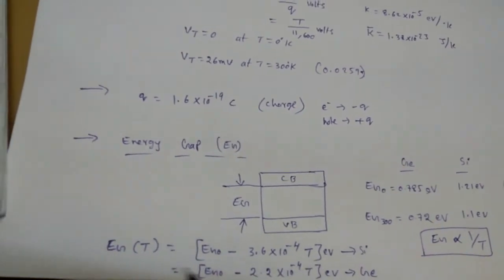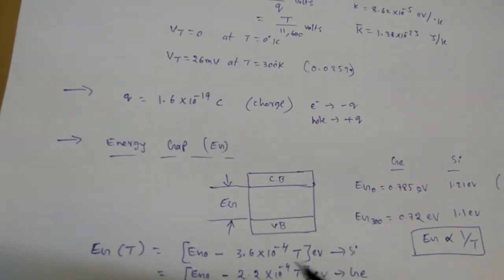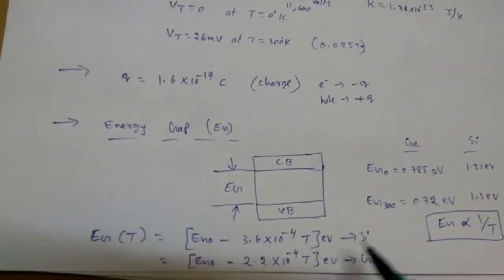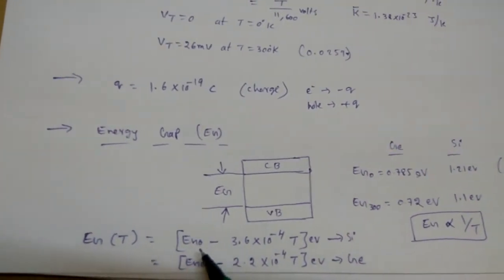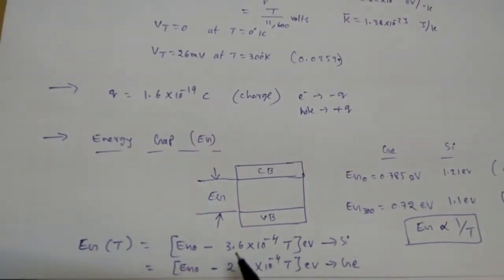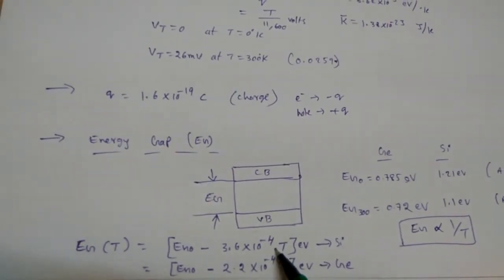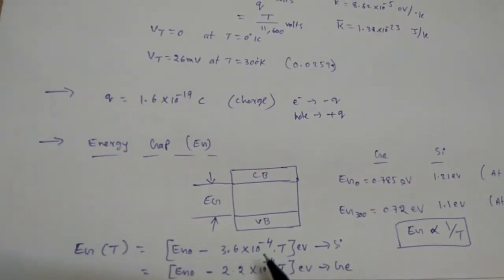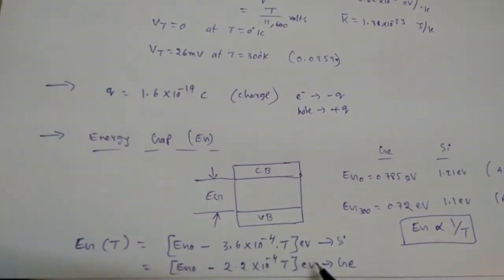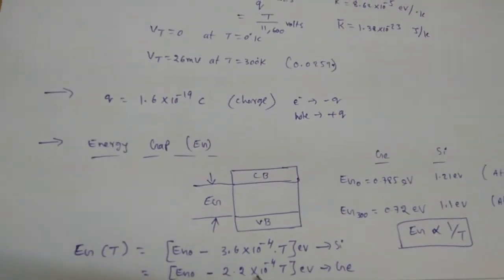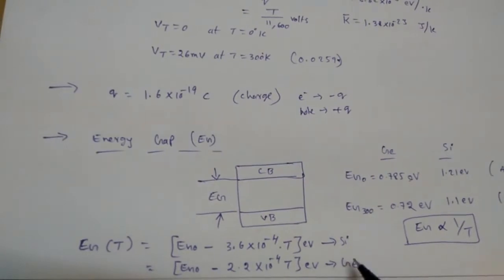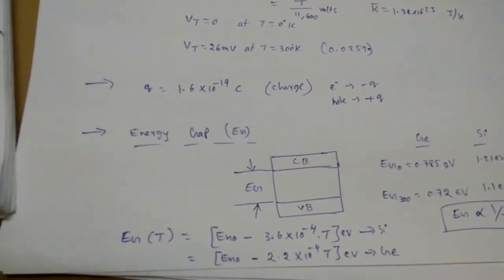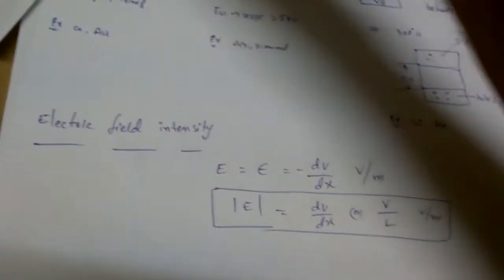To find the energy gap at any temperature, we use these expressions. For silicon: EG = 1.21 − 3.6×10⁻⁴·T electron volts. As temperature increases, this term increases and EG decreases. For germanium: EG = EG₀ − 2.2×10⁻⁴·T electron volts. By substituting temperature values, we can find the energy gap at different temperatures.